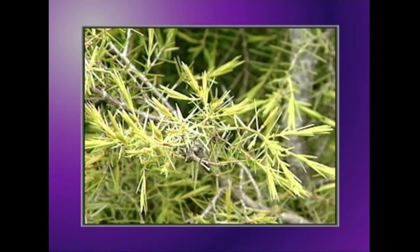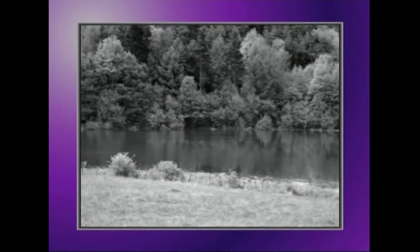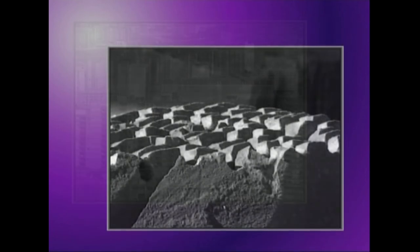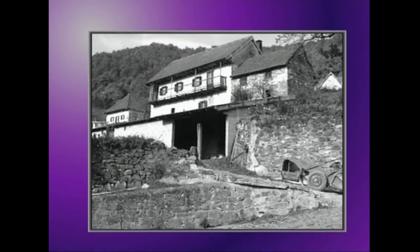Kolore baten tonu aldaketez baliatu ere, lor dezakegu harmonia. Adibiderik errazena zuri beltzeko argazkia da. Zuri beltzeko argazkietan, tonu aldaketak argiaren kalitatearen eta norabidearen araberakoak izaten dira. Itzal ugarri horiek eransten baitiote volumena eta sakontasuna argazkiari.